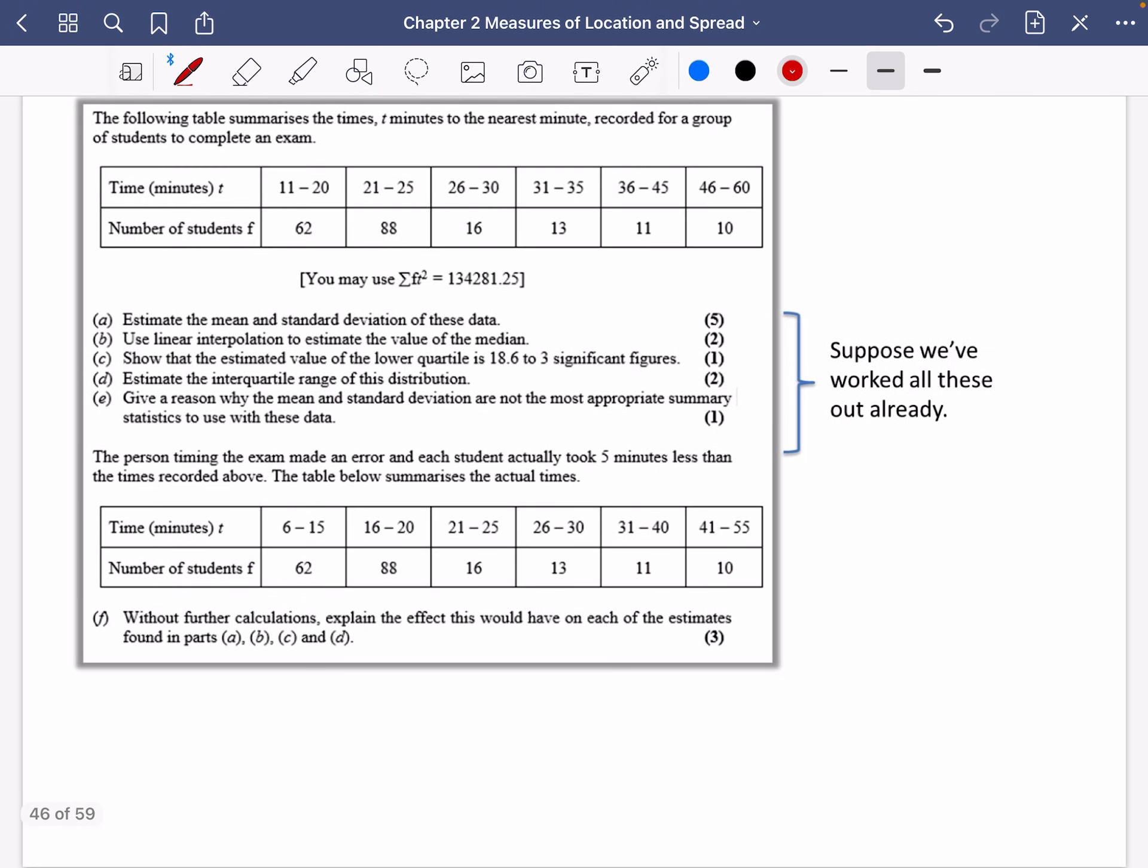So this question, we're not going to do the whole thing. We're just going to do the easy looking parts of it. We're not going to do all of A, B, C, D and E. I've said suppose that we've worked these out already. Basically, all they ask for you to do is to find the mean, the standard deviation, the median, the lower quartile, the interquartile range. And it says give a reason why we don't have to do that for this next part.